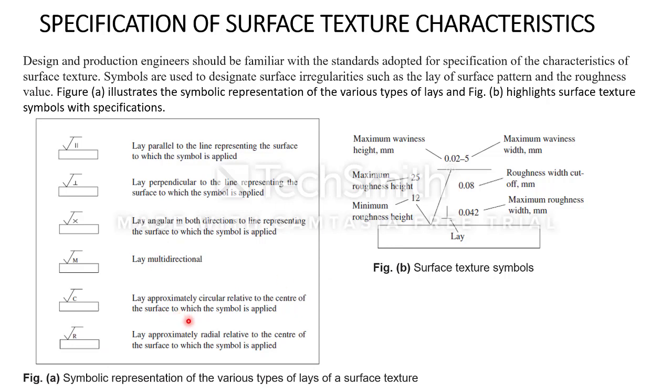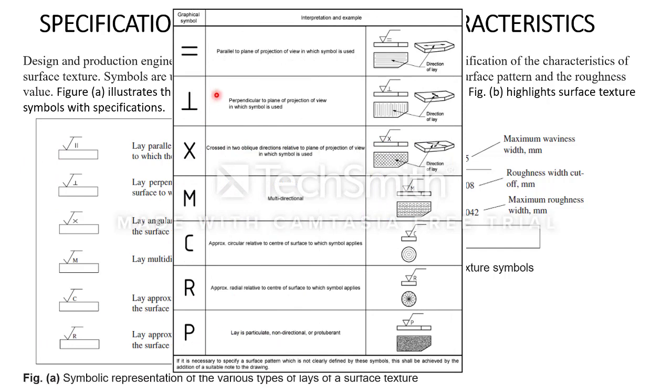It can be approximately circular, or radial relative to the center of the surface. I will show you the next figure, you will get an idea how the manufacturing process for every job varies as I represented in these symbols. If it is parallel, so if this is my job, manufacturing process, the material built will be like this parallel to the plane of projection. If it is perpendicular, the process will be perpendicular to the plane of projection. If it is crossed into the plane of projection, two oblique directions related to plane of projection, you can see the pattern here.